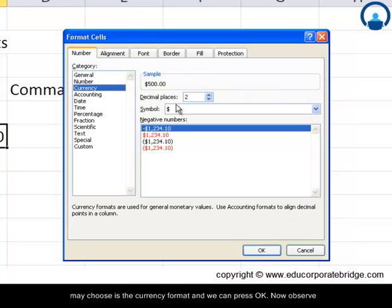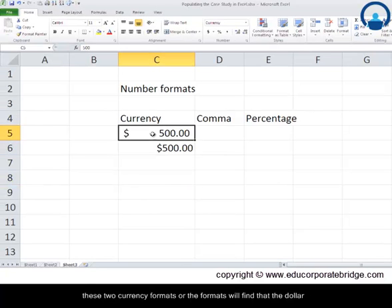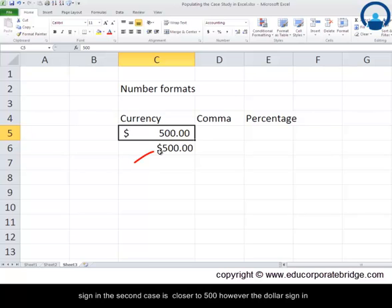The one which we may choose is the currency format, and we can press OK. Now observe these two currency formats—you'll find that the dollar sign in the second case is closer to 500, however the dollar sign in the first case is far off.